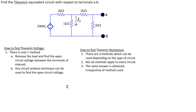In this example, we will see how to find the Thevenin equivalent of a circuit which has dependent sources only. Consider this given circuit of interest. The load resistor has already been removed and the terminals of interest A and B are marked. This circuit has a bunch of resistors. It does not have any independent source and it only has one dependent source.